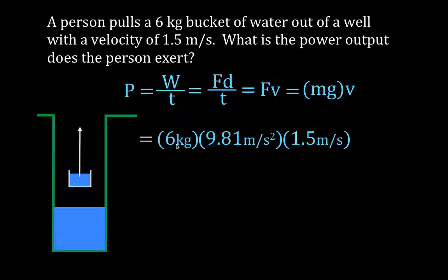The mass of the bucket is 6 kilograms. Multiply that times the acceleration due to gravity, 9.81 meters per second squared. That's the weight of the bucket. That's the force the person has to use to pull the bucket out of the well. Multiply that times the velocity at which the bucket is coming out of the well, 1.5 meters per second, and you get that the power output of that person is 88.3 watts. And if they're going to exert 88.3 watts over a long period of time, they would have to continue to pull that bucket out of the well at a velocity of 1.5 meters per second.